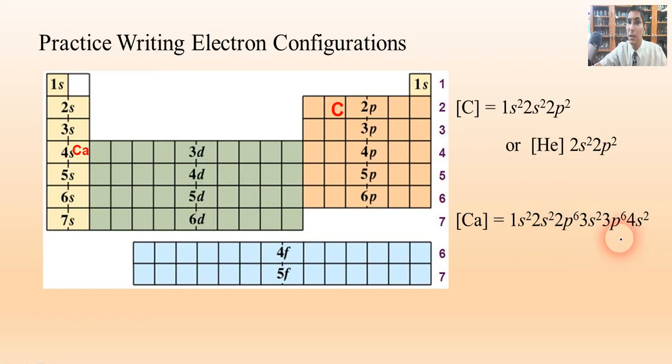Now if we want to do this in the abbreviated way, we look at the previous noble gas, which I believe would be argon in this case. And then from argon, it's just going to be 4s2. And so this abbreviated way of writing electron configurations is kind of a nice shortcut to help us to write these in a much shorter way.